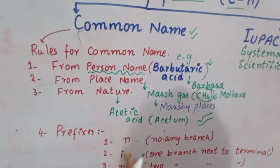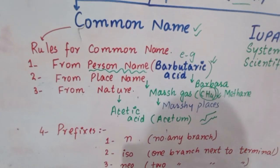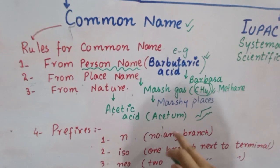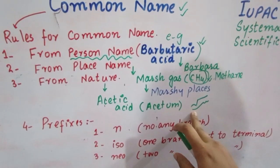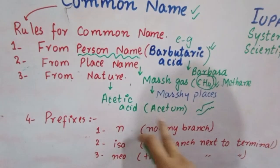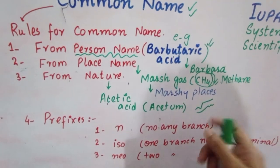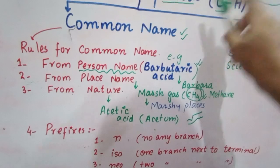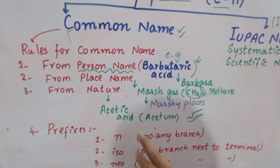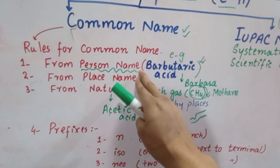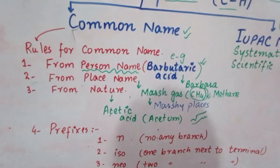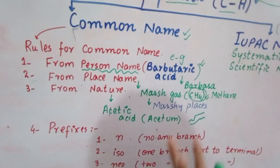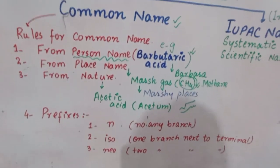Thirdly, from the nature - like acetic acid is an acid that has a taste like acetum. Acetum is vinegar which you use at home, it is just like vinegar. So we named it based on its nature. We are discussing common names - common names are named after their discoverer, the place from where they are discovered, and from the nature.